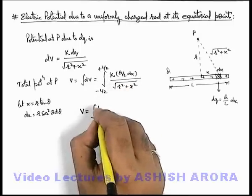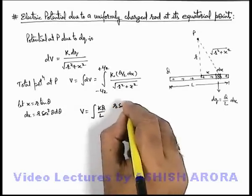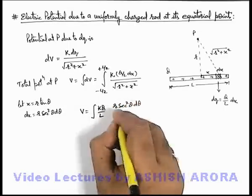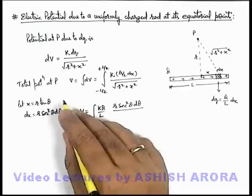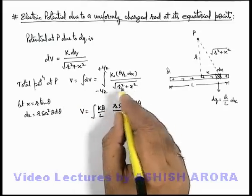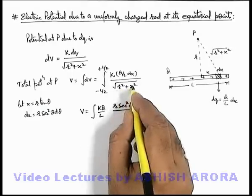So this will be kQ/L is a constant, dx if we substitute it is r sec² θ dθ divided by... if I just substitute the value of x as r tan θ, here you can see it'll become r²(1 + tan² θ) that'll be r² sec² θ.